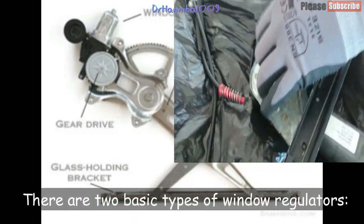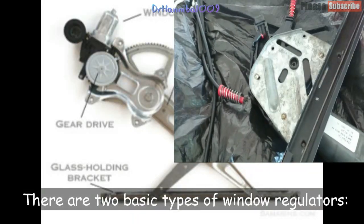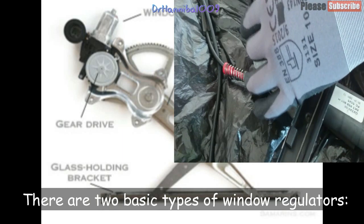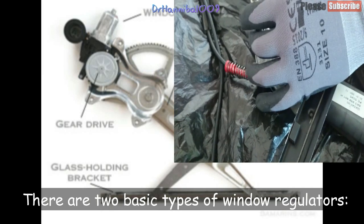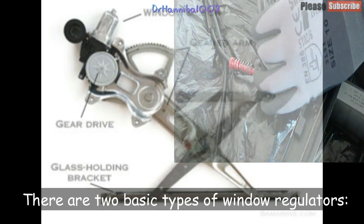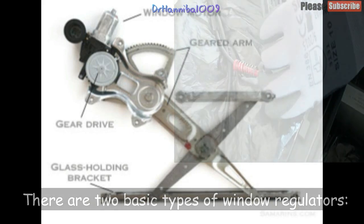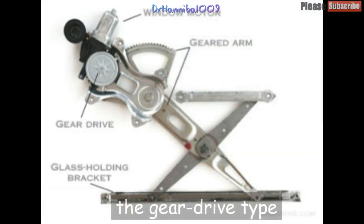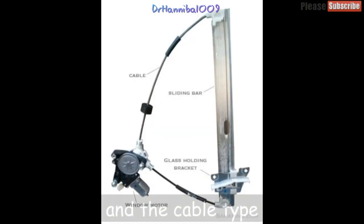There are two basic types of window regulators. Number 1: the gear drive type. Number 2: the cable type.